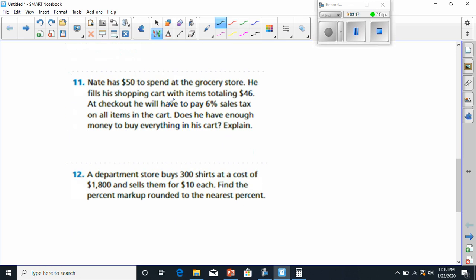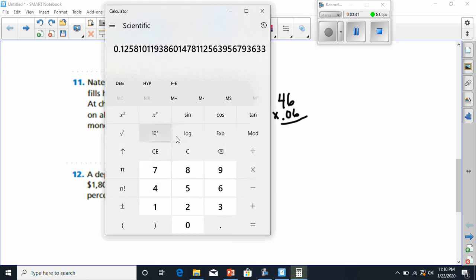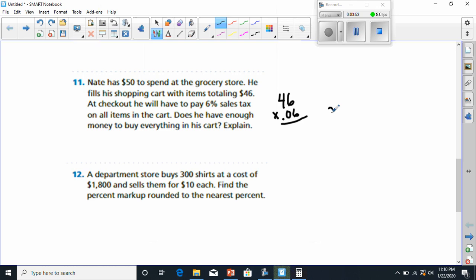All right, number eleven. It has $500 to spend. The grocery store, he fills a shopping cart with the items to lean $46. $46 is what he spent. At checkout he will have to pay 6% tax, so he's going to multiply 46 by 6%, which will be 0.06. All right, and let's see. If we put that in our calculator, 46 times 0.06, that was going to equal $2.76.